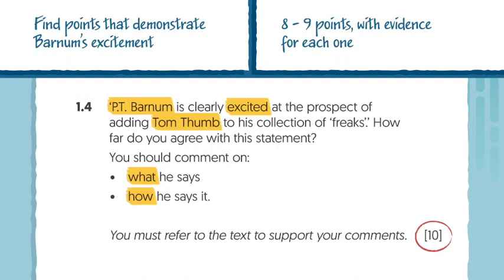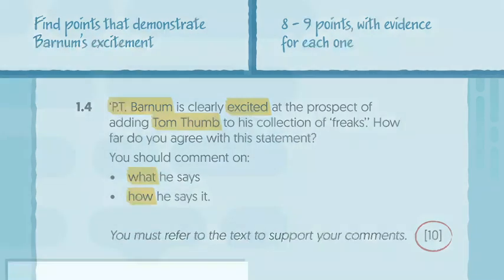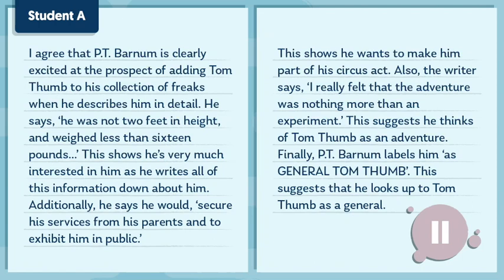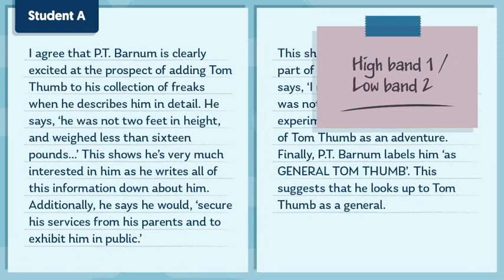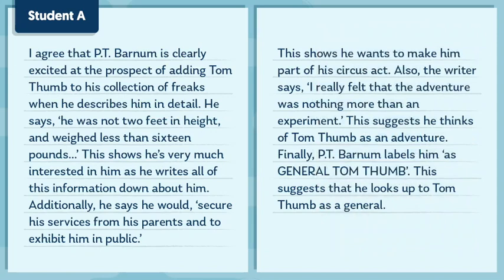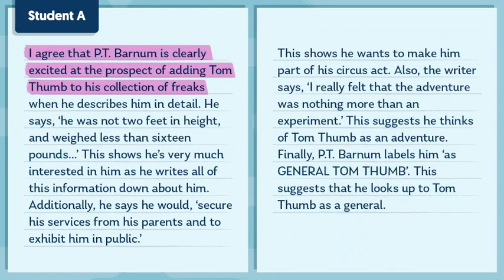We're just looking at extracts from each student's response here, so we'll only award marks for what you can see. Let's start with Student A. Press pause now to give yourself time to read through this extract carefully and press play again when you're ready. This student is working at a high band 1 or low band 2, meaning they'd receive two or three marks out of a potential 10. Immediately, they directly answer the question in their opening sentence: I agree that P.T. Barnum is clearly excited at the prospect of adding Tom Thumb to his collection of freaks.